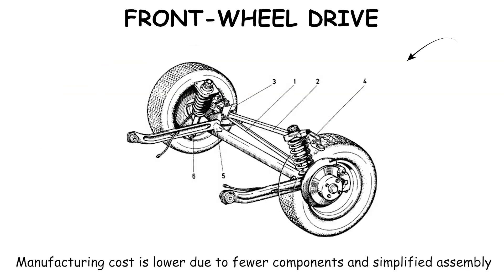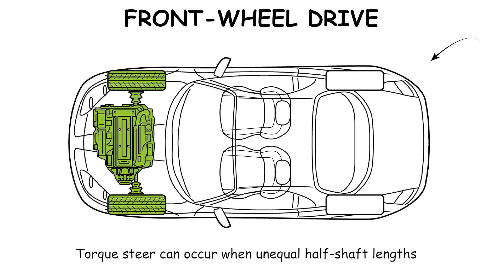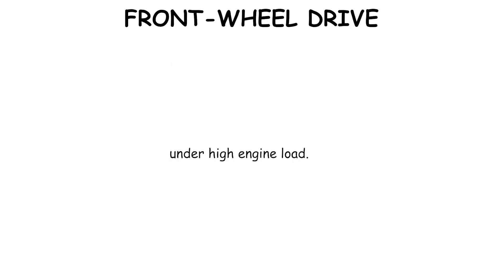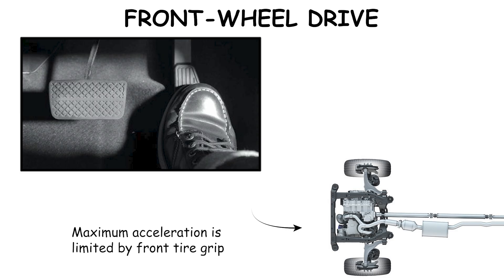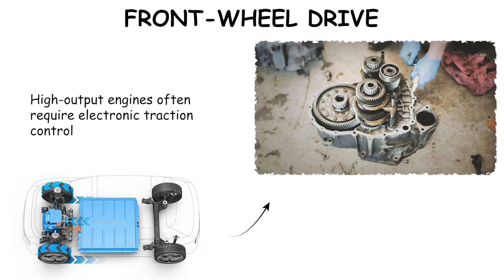Manufacturing cost is lower due to fewer components and simplified assembly. Torque steer can occur when unequal half-shaft lengths create steering pull under high engine load. Maximum acceleration is limited by front tire grip because steering and propulsion loads combine. High output engines often require electronic traction control to manage wheel spin.